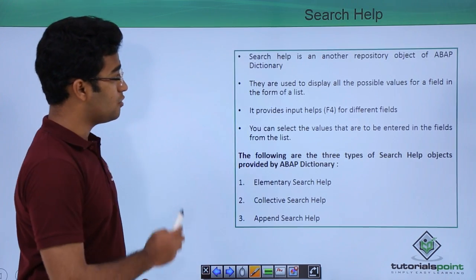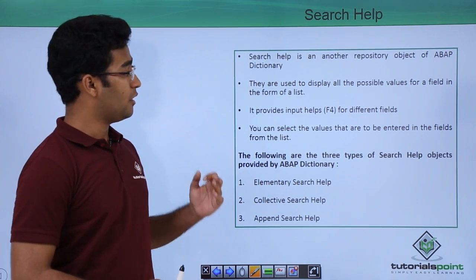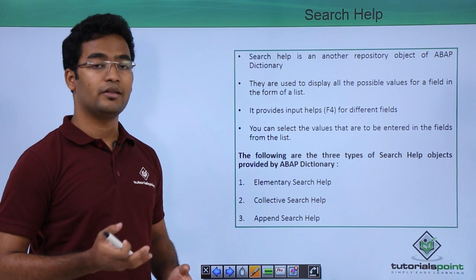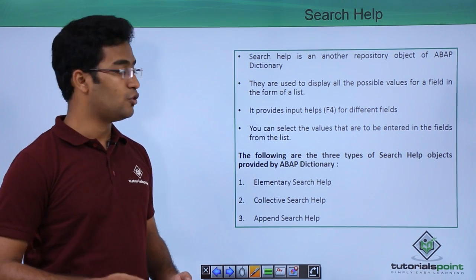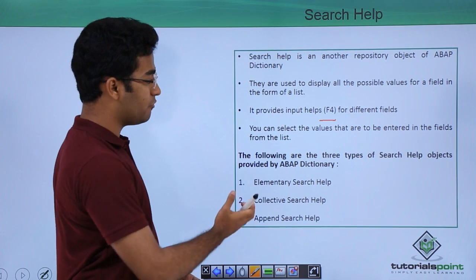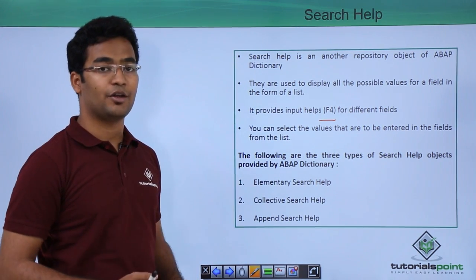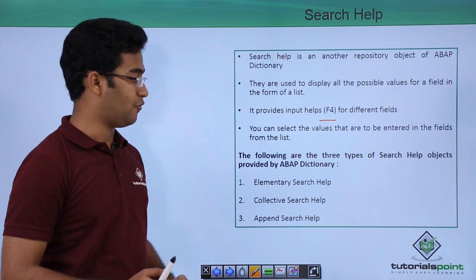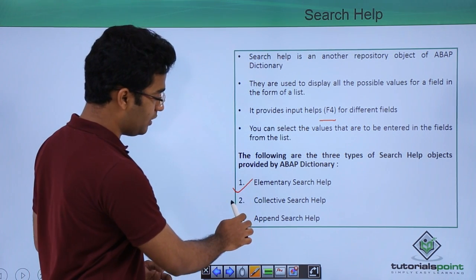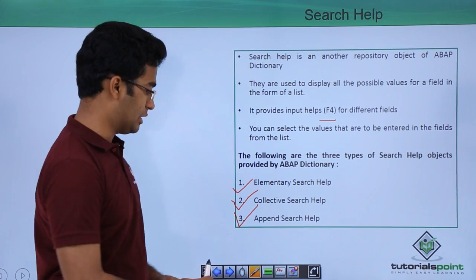So what exactly is search help? Search help is another repository object of ABAP dictionary. If a user wants to enter a particular value into a field and does not know what value to enter, he has the functionality of F4 so that a particular list will be displayed and he can select the value from that list. There are three types of search helps: elementary, collective, and append search helps.